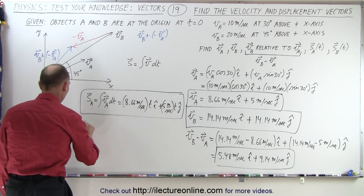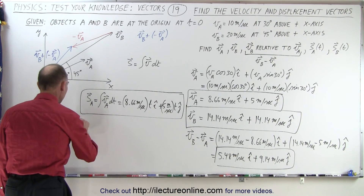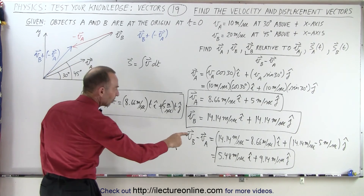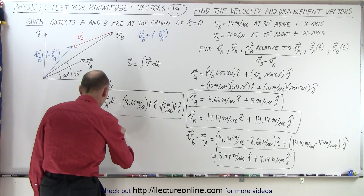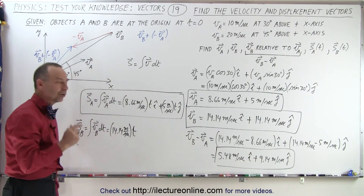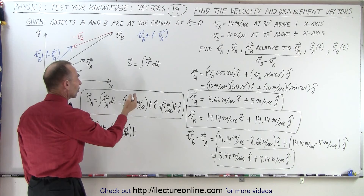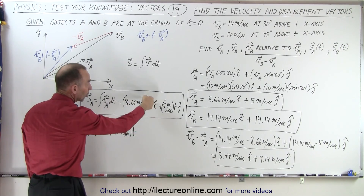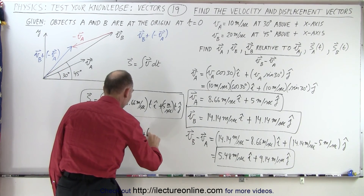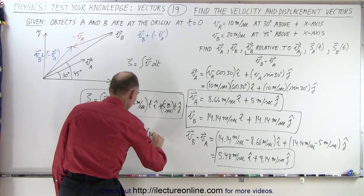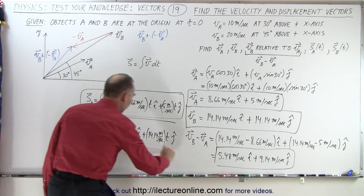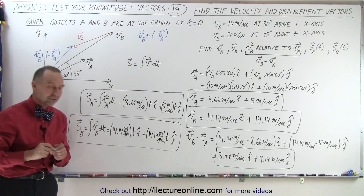We do the same for B. The displacement vector SB equals the integral of VB dT, which gives 14.14t m/s in the i-direction plus 14.14t m/s in the j-direction. Note that the units of T are seconds, so seconds cancel out leaving meters. That's what our displacement vectors for A and B look like as a function of time.